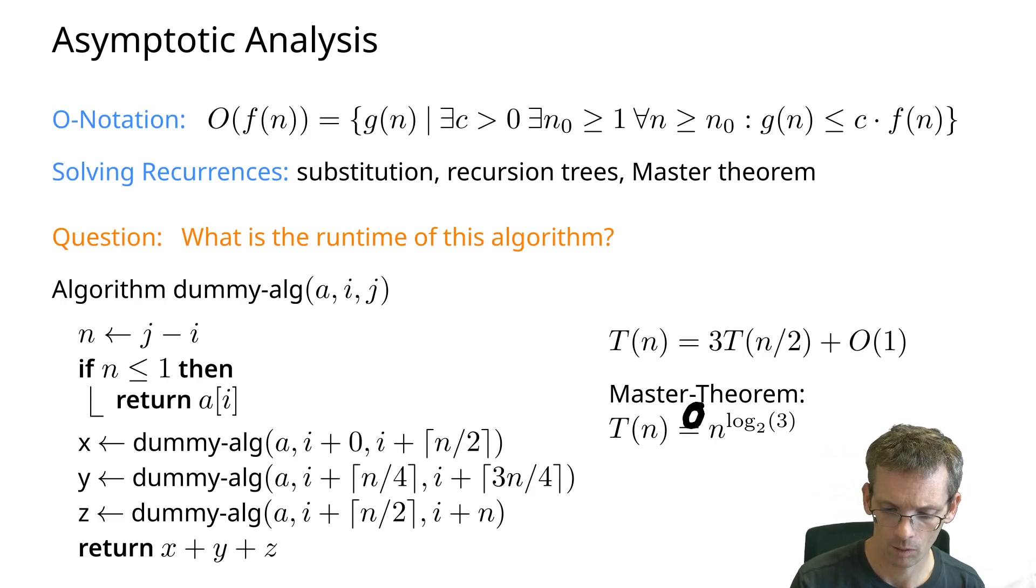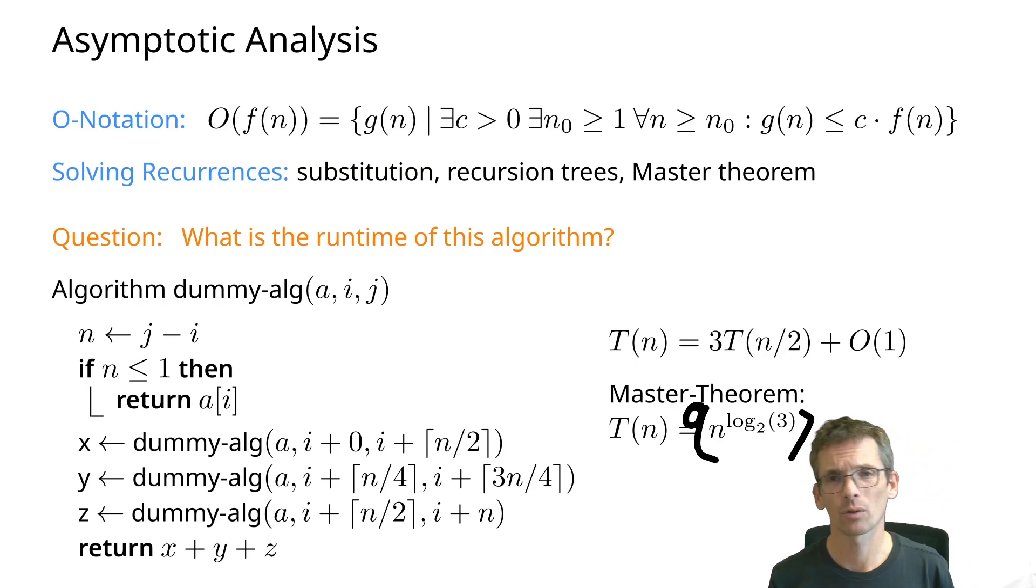The master theorem gives us that the running time is O or theta of n to the log 3 base 2. So much about asymptotic notation and analysis.